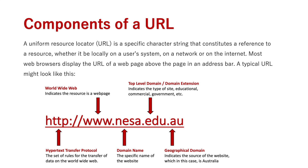There are many different types of domain extensions which outline the type of organization that the website is being hosted for. Then at the end we have the geographical domain, which indicates the source and country of origin of a website. In this case '.au' indicates Australia. There are other domain extensions such as '.gr' for Greece and '.vi' for Vietnam — many extensions which indicate where a website has come from.